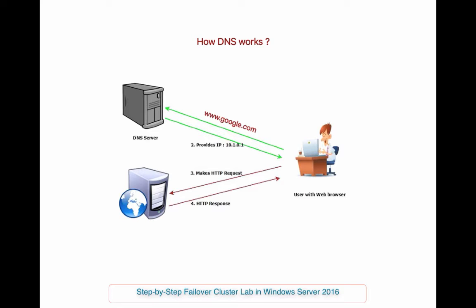So when you type a web address like www.google.com, that request is sent to the DNS server associated with that domain name, which translates it into a machine-friendly IP address — for example, 10.1.0.1 — and directs your internet connection to the correct website based on that IP address. You can also have a DNS cluster to maintain this functionality when one server fails.